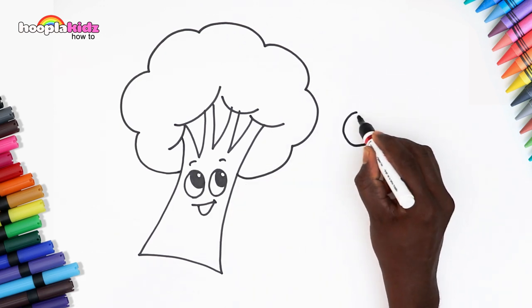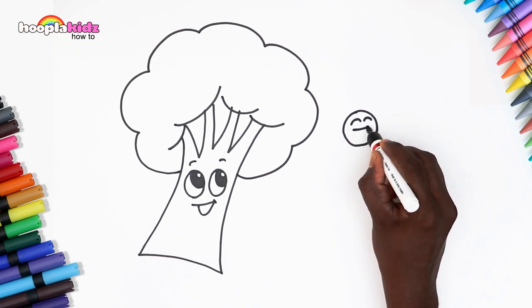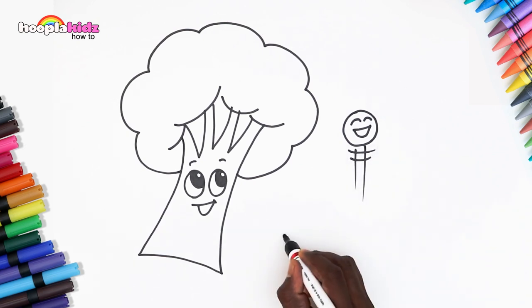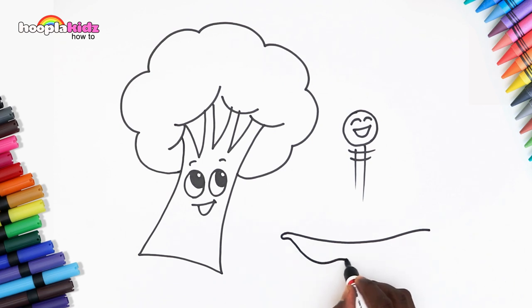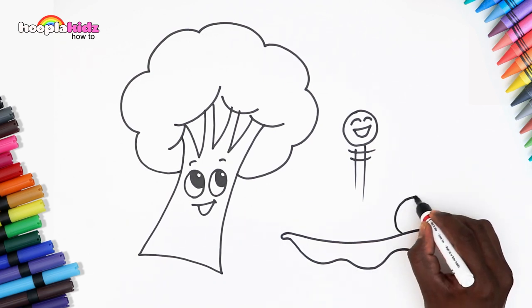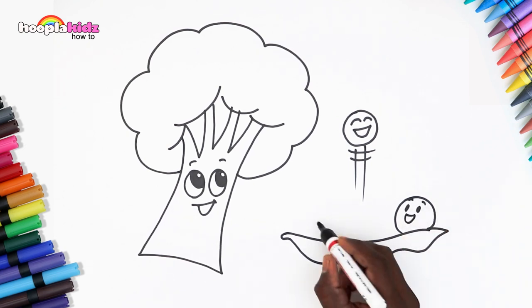Now come the yummy peas. Start with a small circle, eyes and a happy grin. Our cute pea is jumping with joy. Now draw the pod with a curvy line on one side and a wavy line on the other. And in the same way, draw the other peas as well. Wasn't that easy?